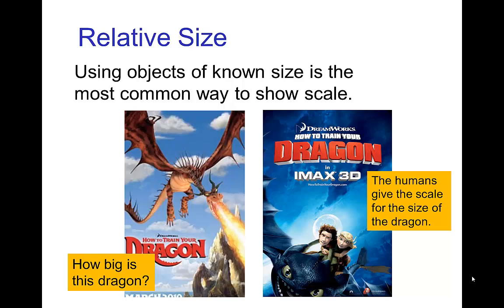One of the simplest ways of doing that is to use objects of known size and show contrast. In that sense, the poster on the left is somewhat ambiguous in terms of the size of the dragon because there's nothing we can really compare it to. On the other hand, the poster on the right — because we see humans sitting on the back of the dragon — we have a sense that the dragon is large compared to people. Even though these are children, it's still quite a large animal because we know the size of humans.